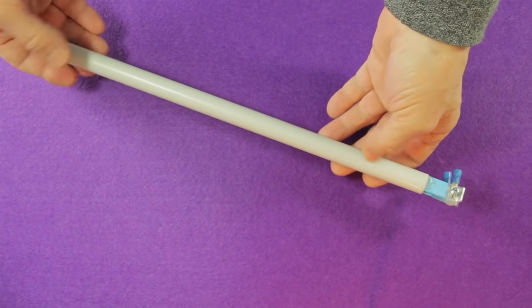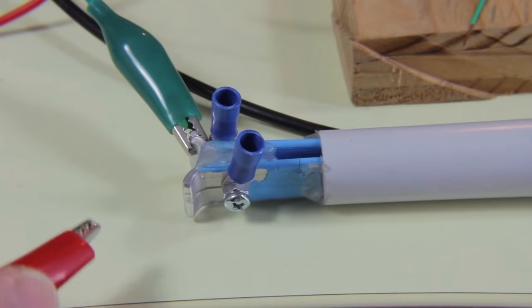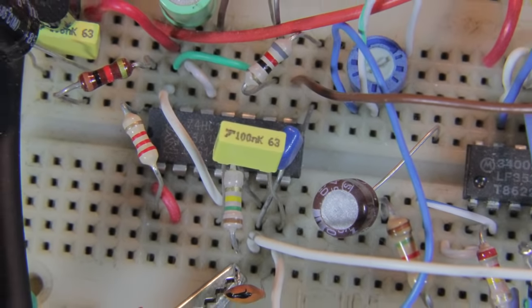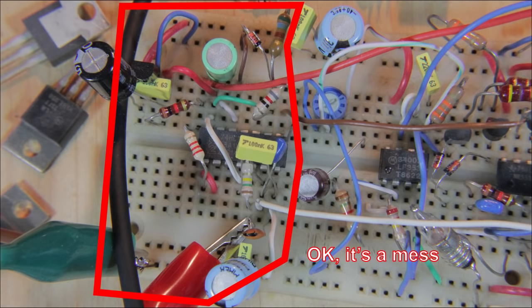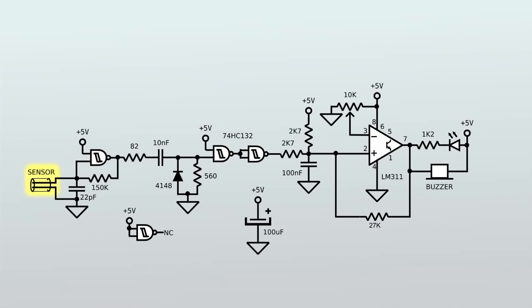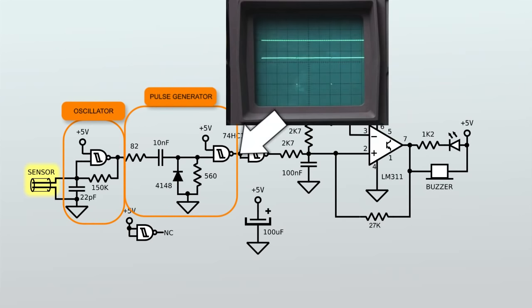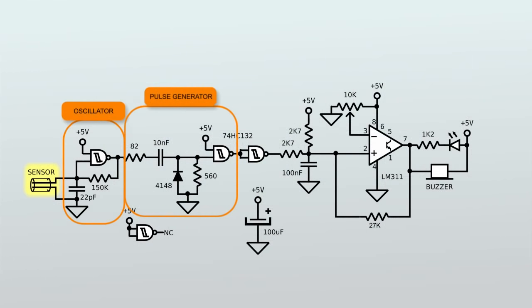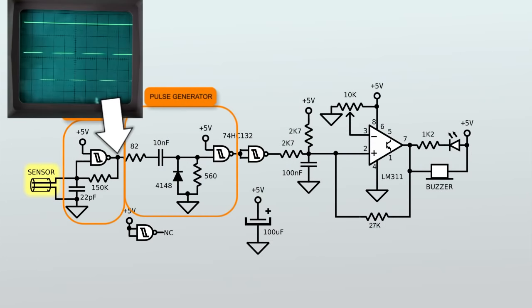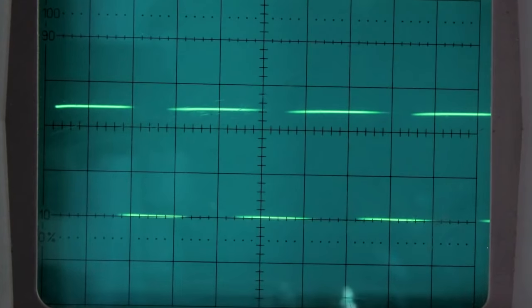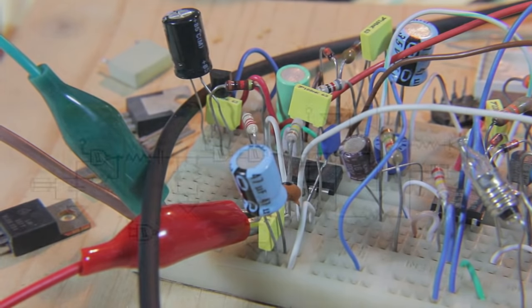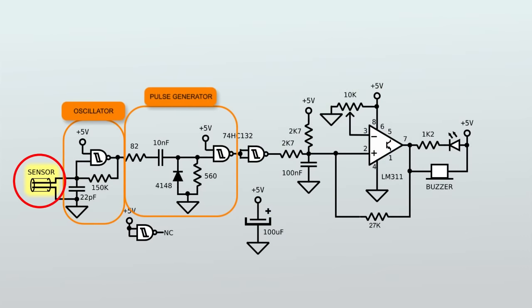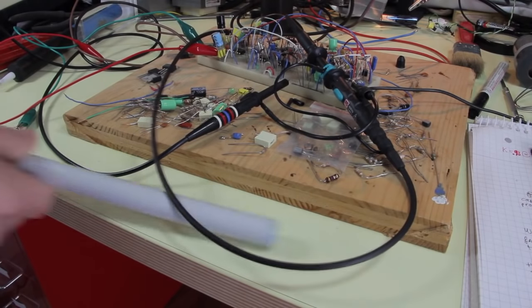Alright, now the sensor is ready, and the next step is to check how it works. In this section of the breadboard, I've put the circuit shown in this scheme. It is an oscillator followed by a pulse generator. The length of the pulses is designed to be shorter than the shortest cycle of the oscillator when the sensor is completely dry, namely when the capacitance is at its lowest value, hence the frequency is at its maximum. The sensor is represented by this capacitor in the schematic. Now, let's test the circuit.